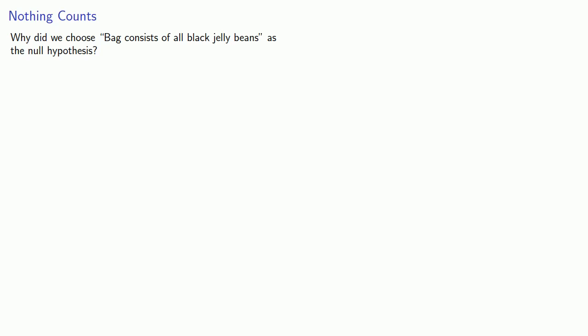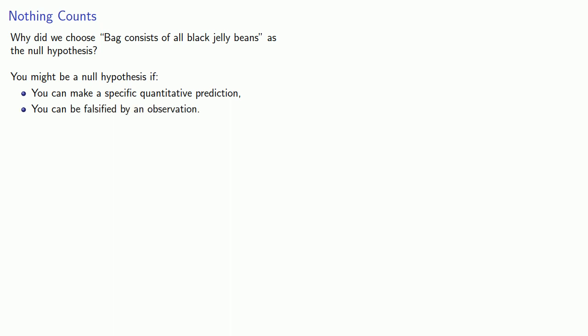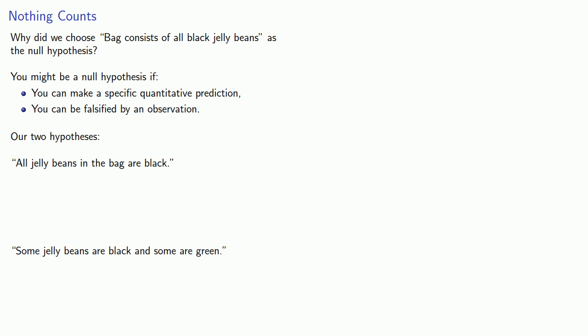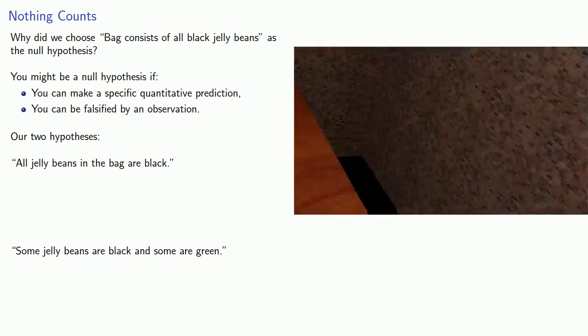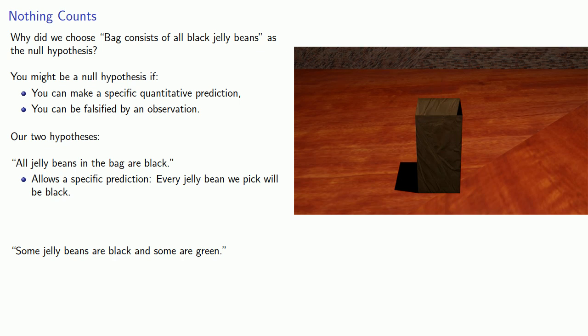Let's go back to that first question: why did we choose 'bag consists of all black jelly beans' as the null hypothesis? It's useful to keep in mind the following idea: you might be a null hypothesis if you could make a specific quantitative prediction, and you could be falsified by an observation. Consider our two possibilities: either all jelly beans in the bag are black, or some jelly beans are black and some are green. The hypothesis 'all jelly beans in the bag are black' allows for a specific prediction — every jelly bean we pick will be black. In contrast, our other hypothesis doesn't allow us to make a specific prediction; the best we can say is some are going to be black and some are going to be green, and that's not very specific.